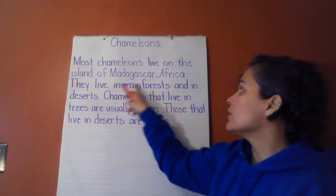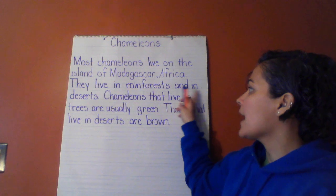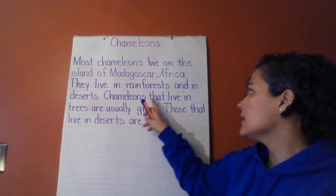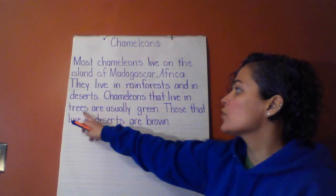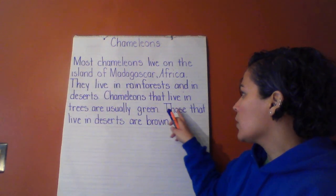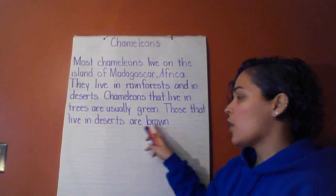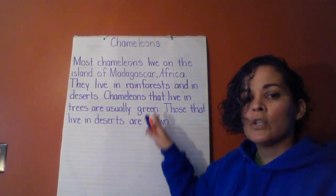They live in rainforests and in deserts. Chameleons that live in trees are usually green. Those that live in deserts are brown.